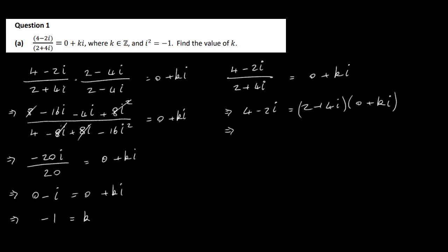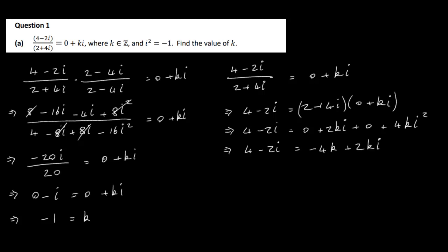Multiplying out, 4 minus 2i equals 0 plus 2ki plus 0 plus 4ki squared. Now the i squared is minus 1, so 4ki squared becomes minus 4k. So on the right-hand side we have minus 4k plus 2ki. Both left and right-hand sides are written in the form a plus bi, so we can equate the real parts and equate the imaginary parts.